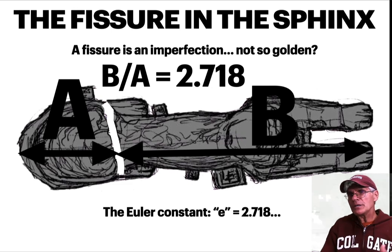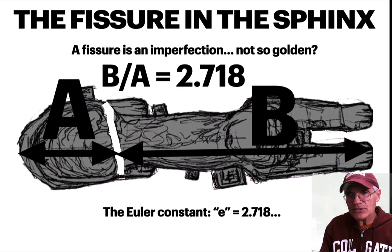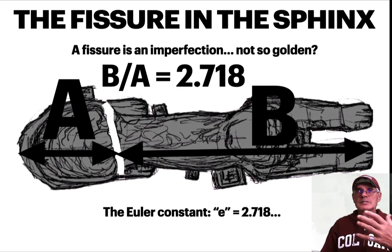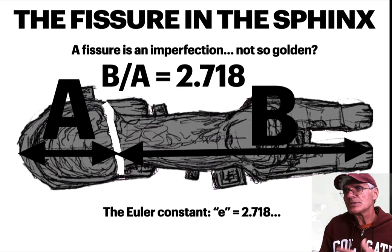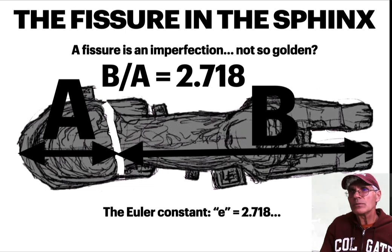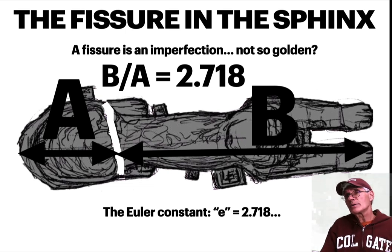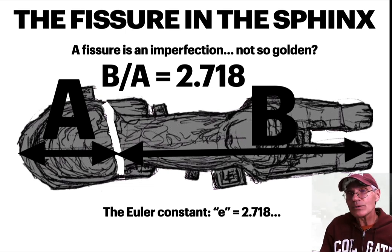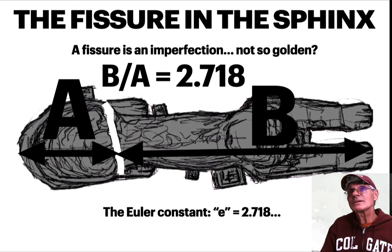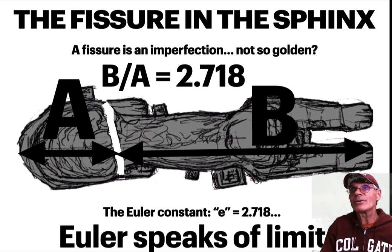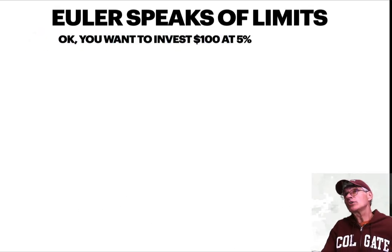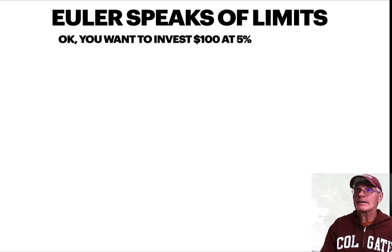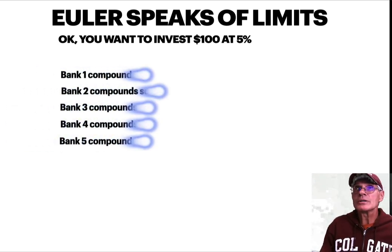Phi is a constant representing beauty and growth; Pi is a constant evoking eternity and circular expansiveness. But Euler has a lot of practical usage in industry, and one of its key applications is compound interest. Euler expresses limits — there are limits in the universe, and Euler speaks to those limits.